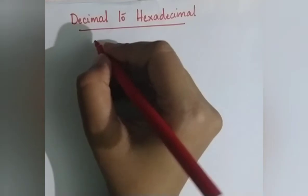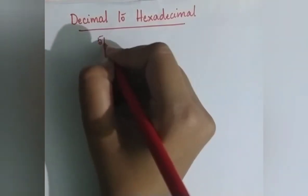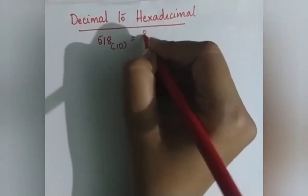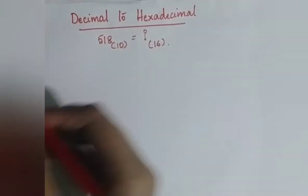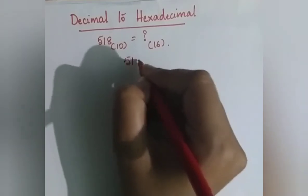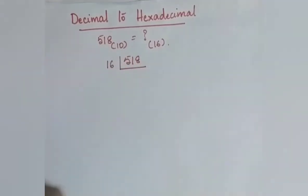Example for this is 518 base 10 to hexadecimal system. So, 518 is the number divided by 16 to get hexadecimal.